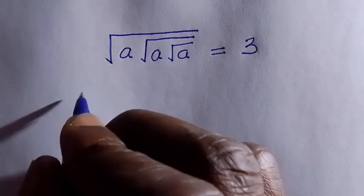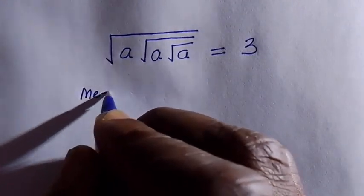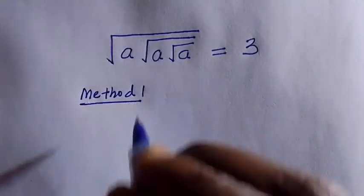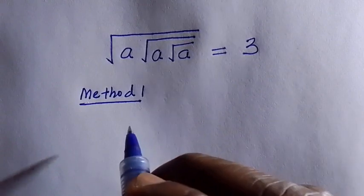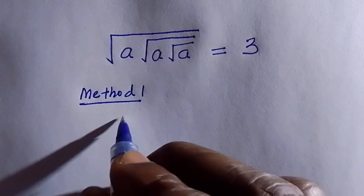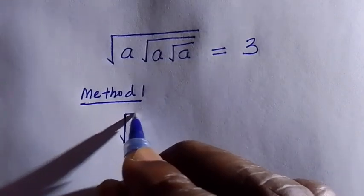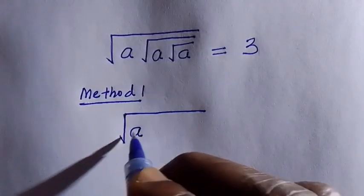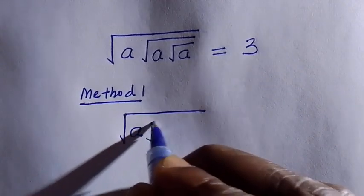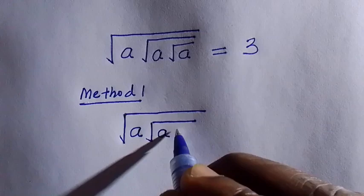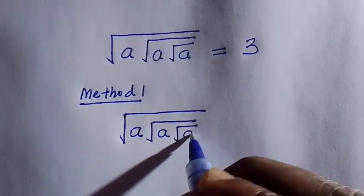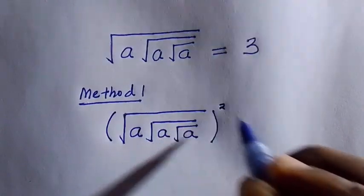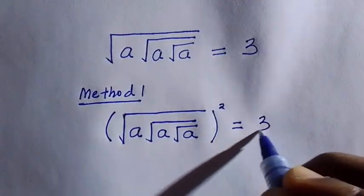So let's see method 1. For the first method, what we are going to do here is we try to take the square of both sides. We have this as root a multiplied by root a inside root a, then we take the square of this equals 3 squared.